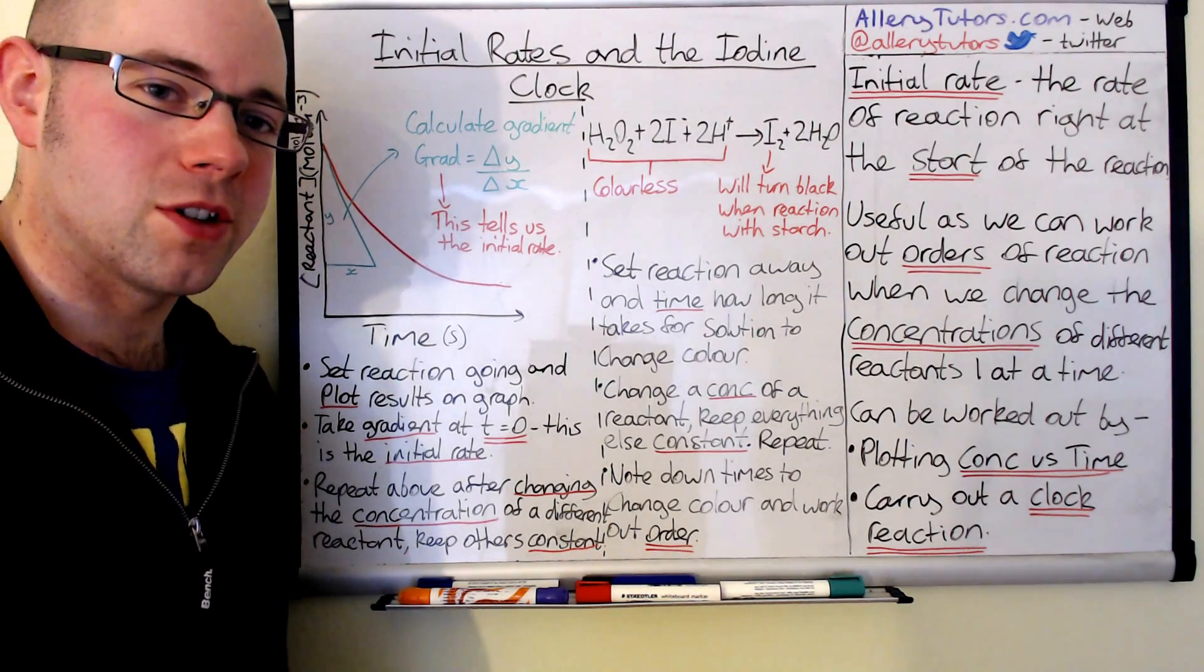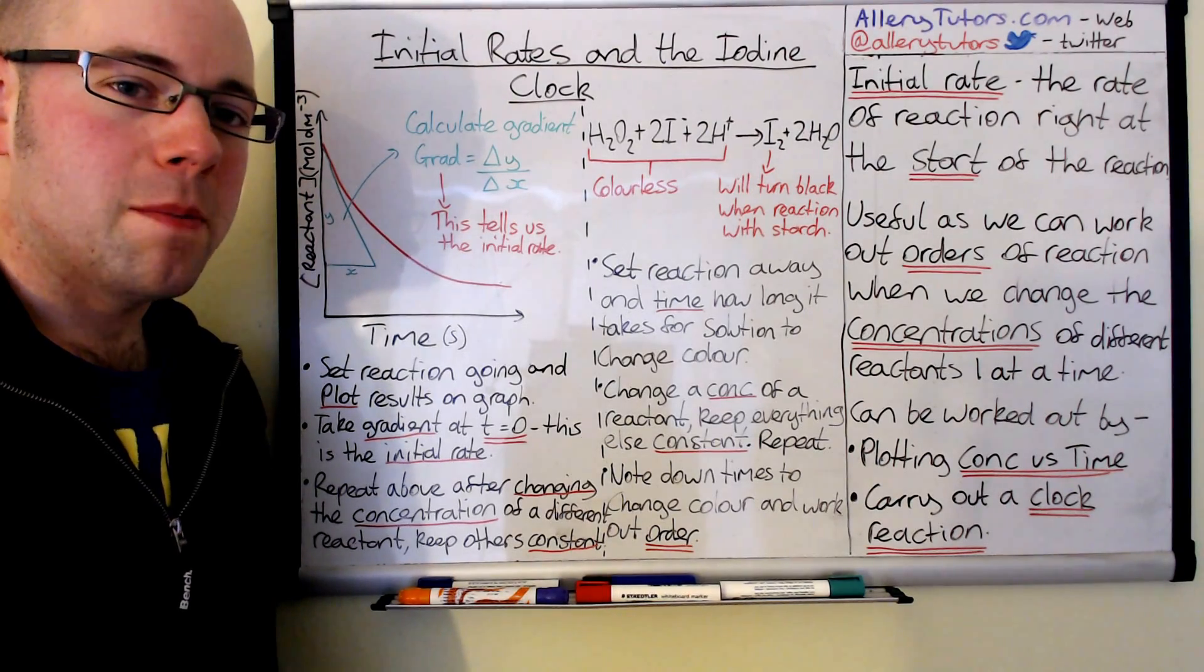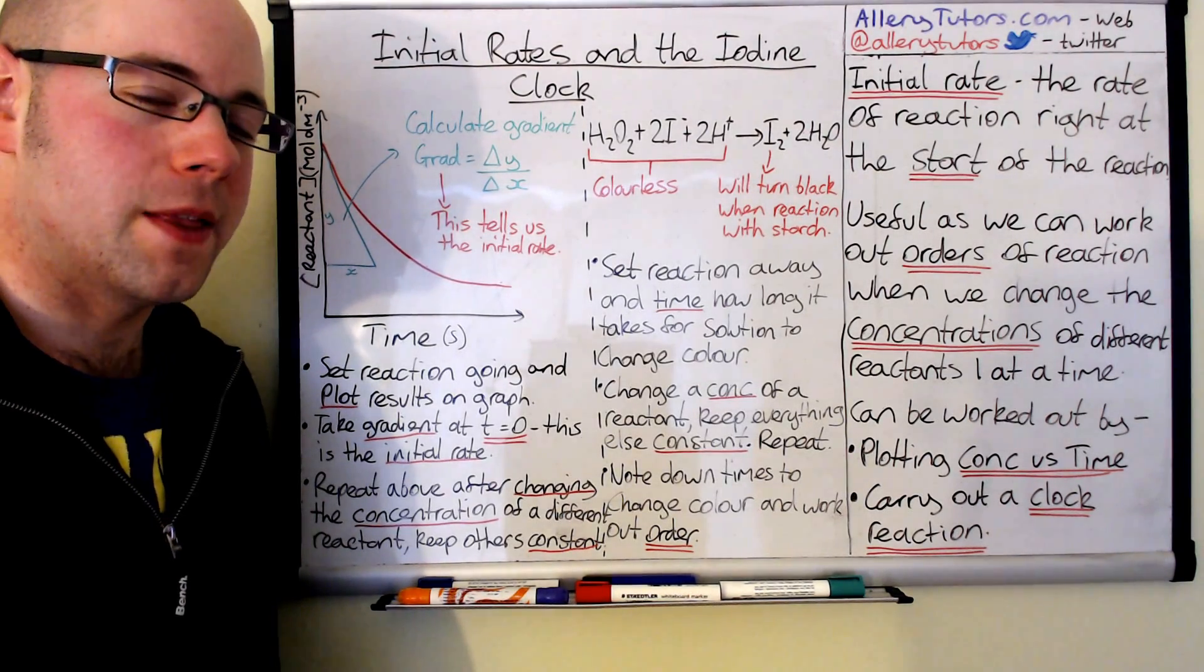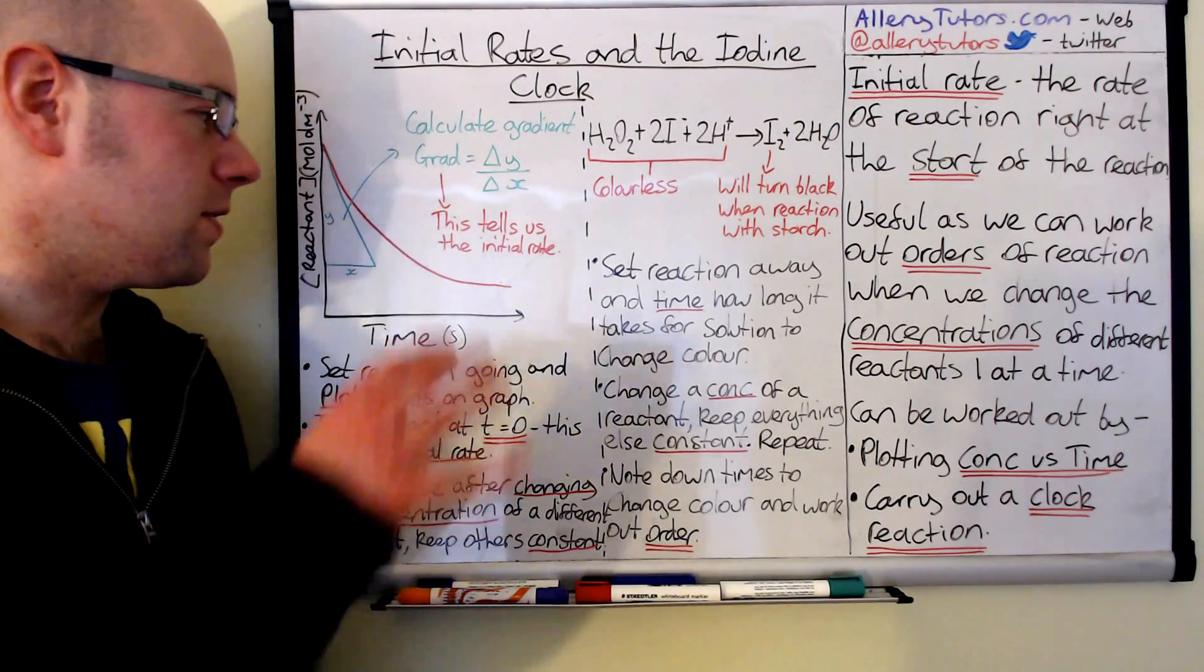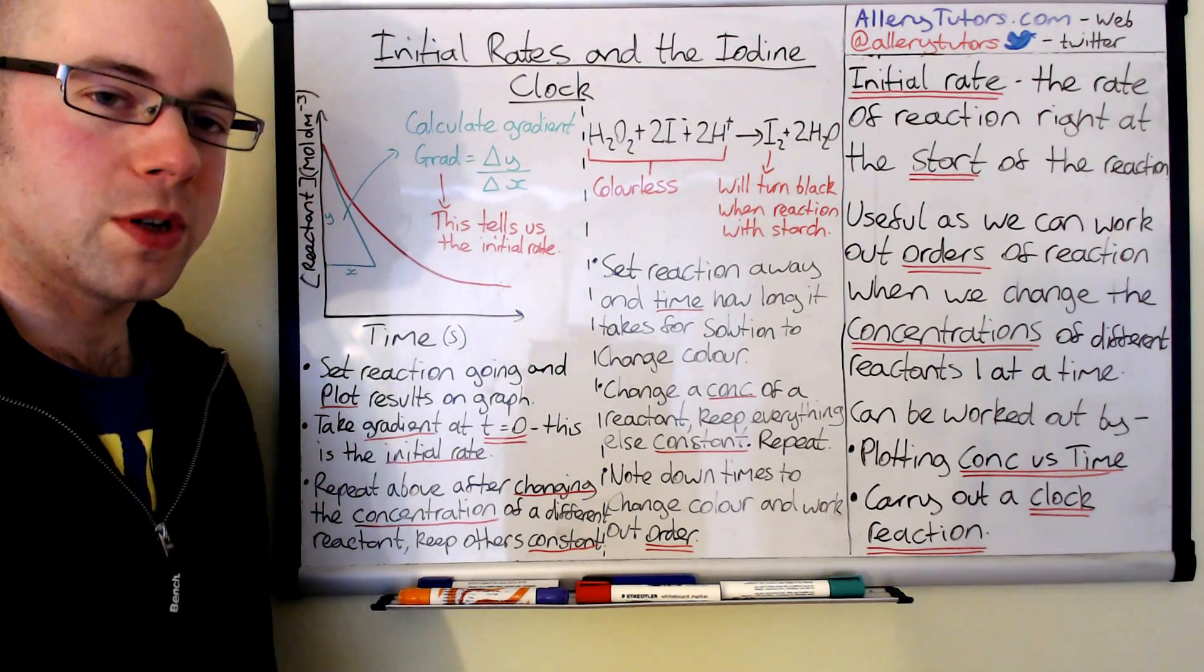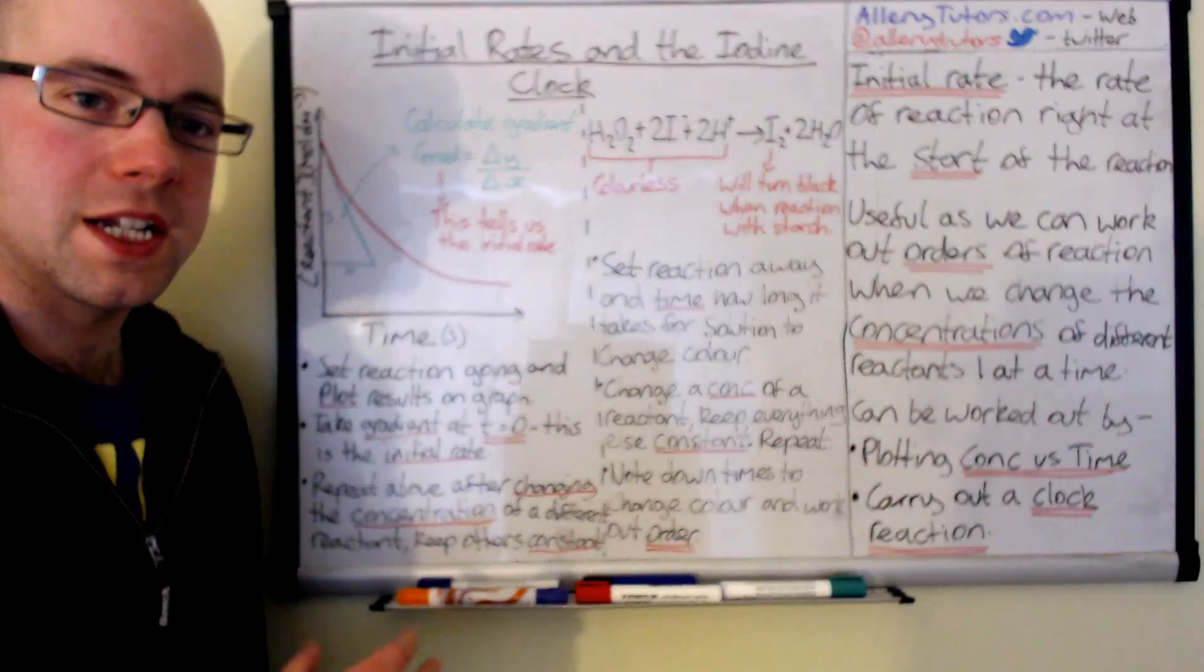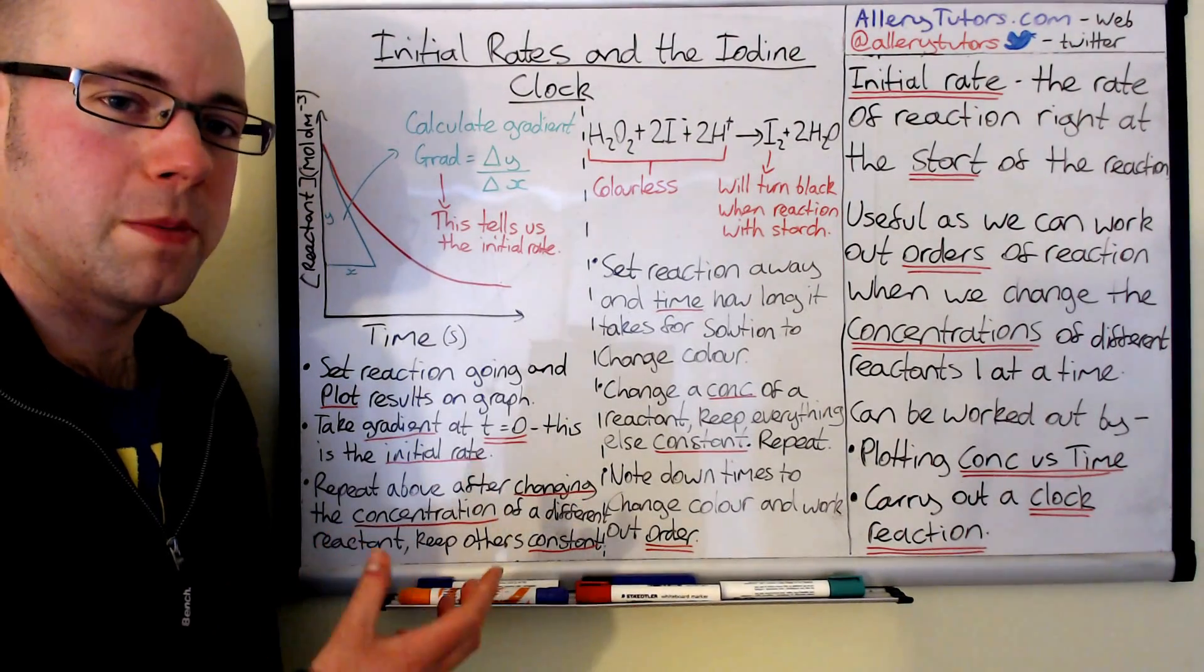We're going to look at two methods which we can use to determine the order of a reaction by looking at the initial rate. The two methods are doing it graphically with a concentration against time graph, or we can do something called a clock reaction. In particular, I'm going to look at the iodine clock because that's probably one of the more common examples.